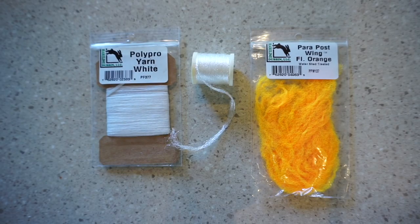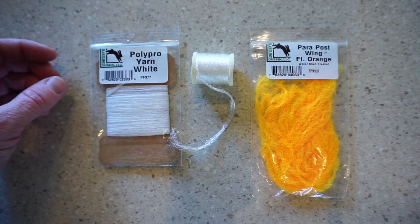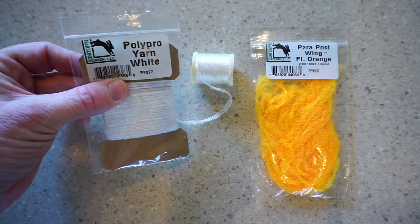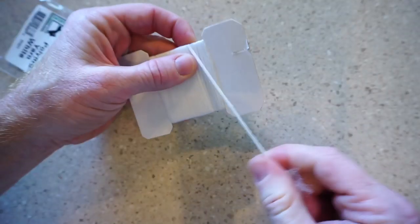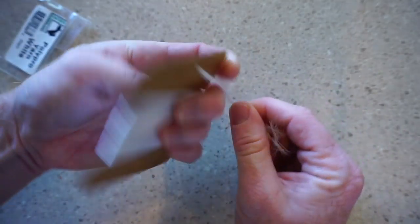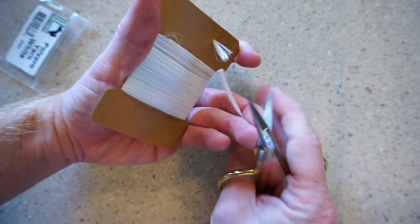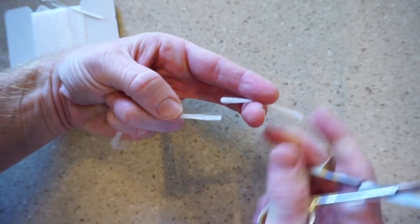Now we need some post material, and there's a lot of it on the market. Some colored, some on a spool, all of it works. Today though, I'm just using the Polypro yarn. Feel free to use what you like though. Pull off a small section like so and cut it to shorter lengths so it's easier to work with.